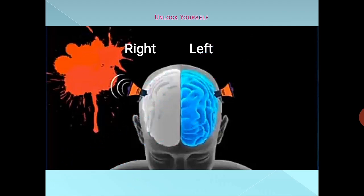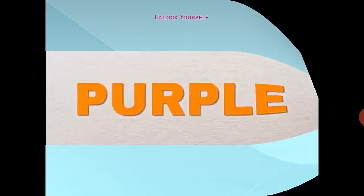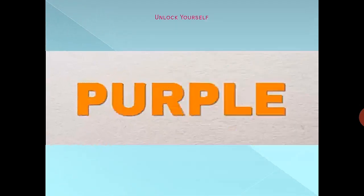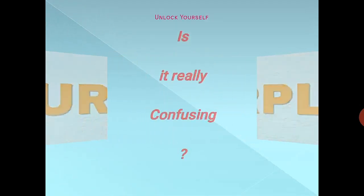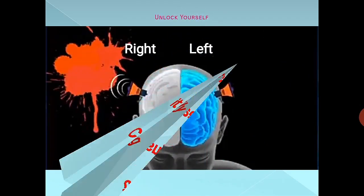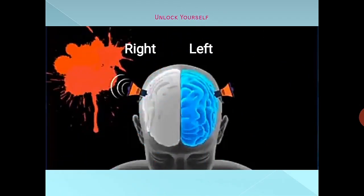It's confusing just because of the left-right conflict of the brain. Our right side of the brain tries to say the color, whereas the left side of the brain insists on reading the word, and that's why we were confused in saying the color and not the word.